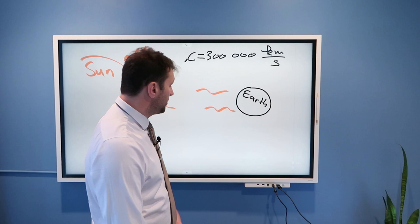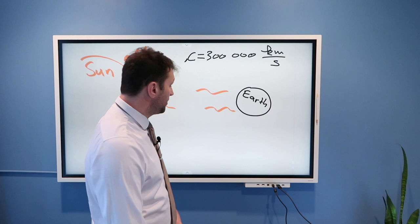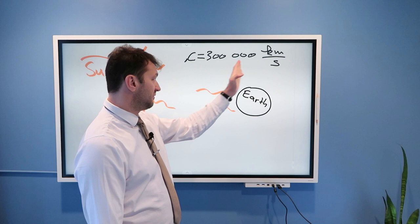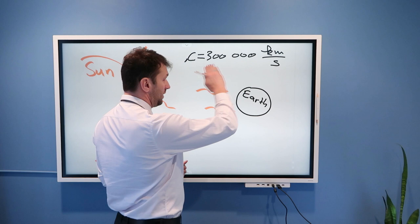And if you studied special theory of relativity, this is the absolute limit of speeds in the universe. Nothing can travel faster than photons, which are particles of light, and they travel at approximately 300,000 kilometers per second in vacuum.